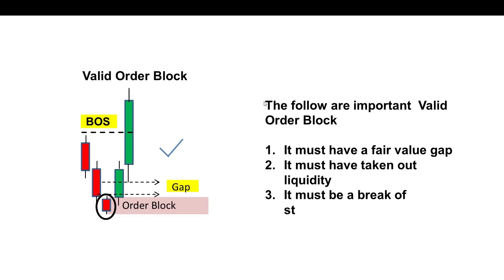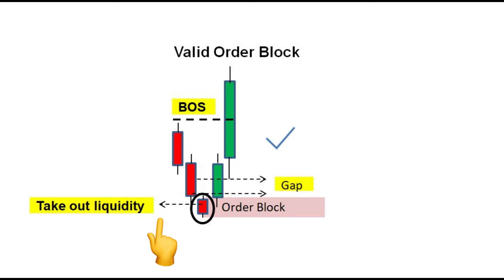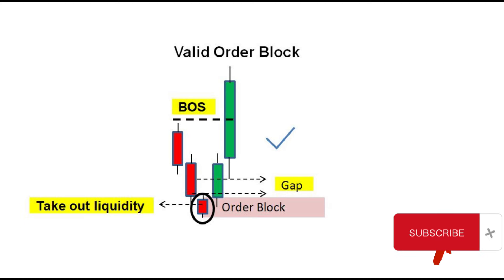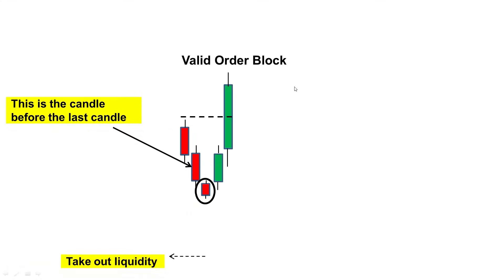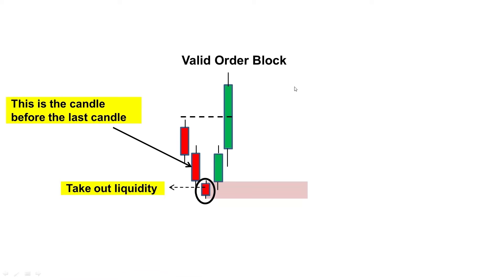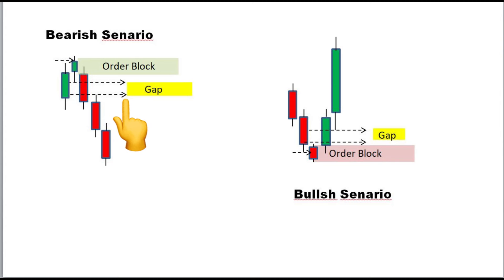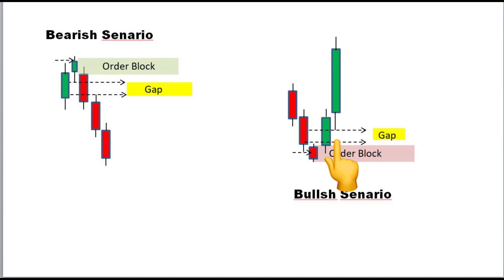In this episode, you will learn how to use order blocks, liquidity, and break of structure. One way we can identify a valid order block is when it takes out liquidity — that is the candle before the last candle. Price must leave a gap; if there is no gap, the order block is not valid. The candle wicks must not overlap. Looking at the example, the first and the third candle's wicks cannot overlap each other. This is also called an imbalance.